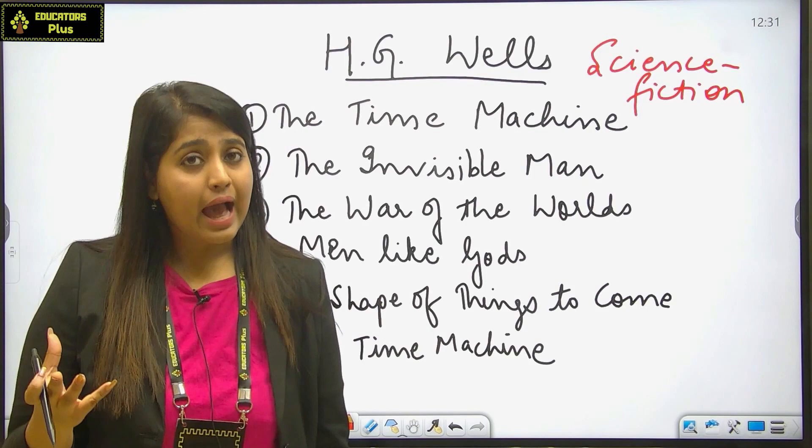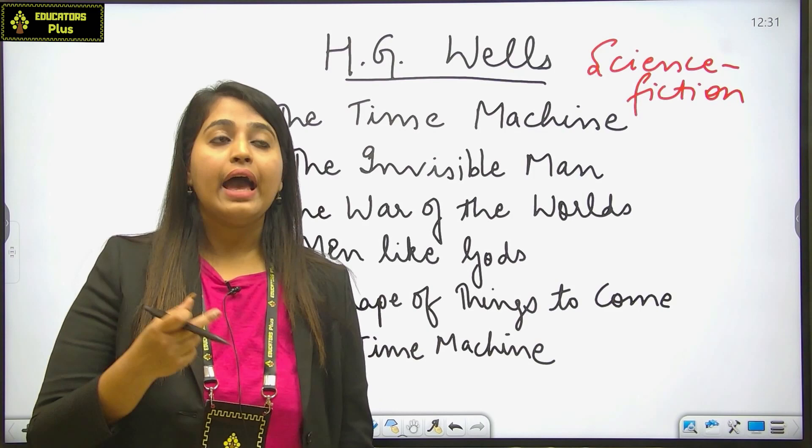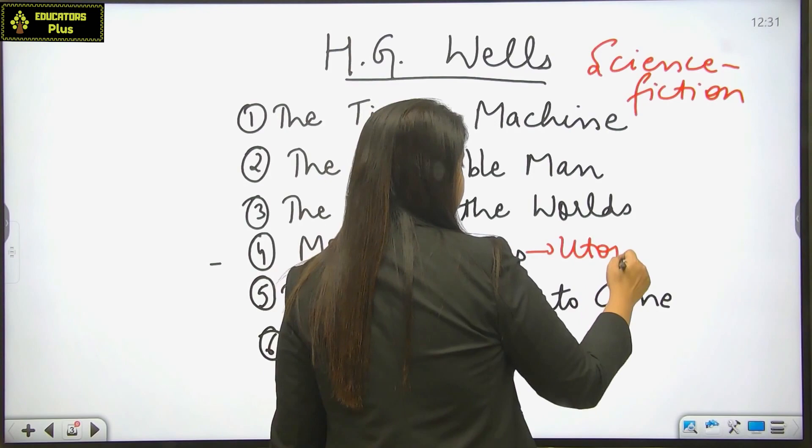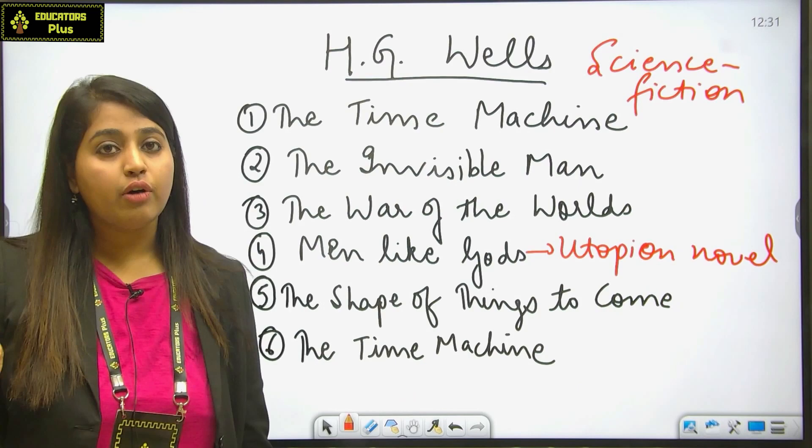H.G. Wells has written a number of utopian novels also, and one of such novel is Men Like Gods. It is a utopian novel. Please remember that Men Like Gods is a kind of utopian novel.